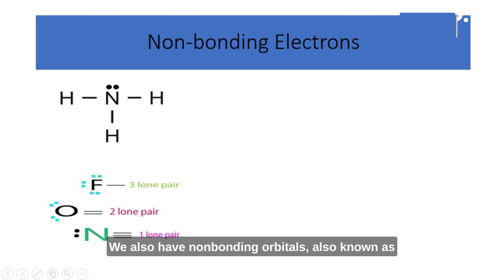We also have non-bonding orbitals, also known as non-bonding molecular orbitals or lone pairs, which are electron orbitals that belong to an atom but are not involved in bonding with other atoms. Non-bonding orbitals are vital because they affect molecule shape, reactivity, and properties. They can be found in atoms of elements that have more valence electrons than necessary to form bonds. These extra electrons reside in non-bonding orbitals.